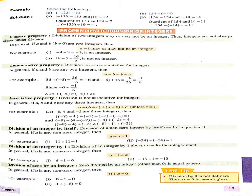Here is an example: A is minus 8, B is 4, and C is minus 2. First, minus 8 and 4 को divide किया, then minus 2 से divide किया, तो our answer is 1. Next, पहले minus 4 and minus 2 को divide किया, और then minus 8 से उसको divide किया, तो our answer is 4. So both conditions are not equal.